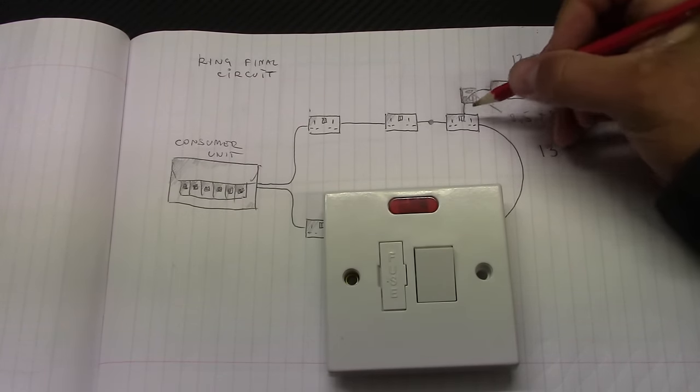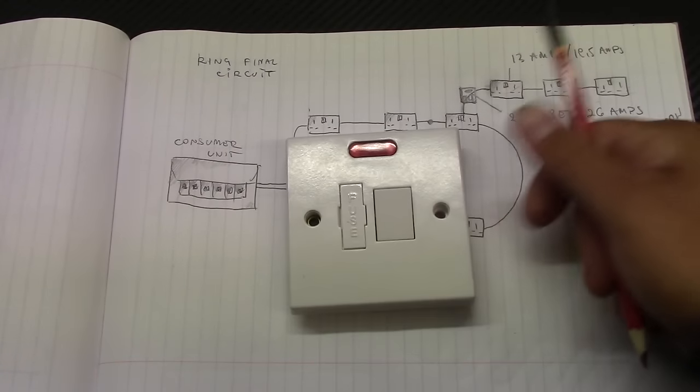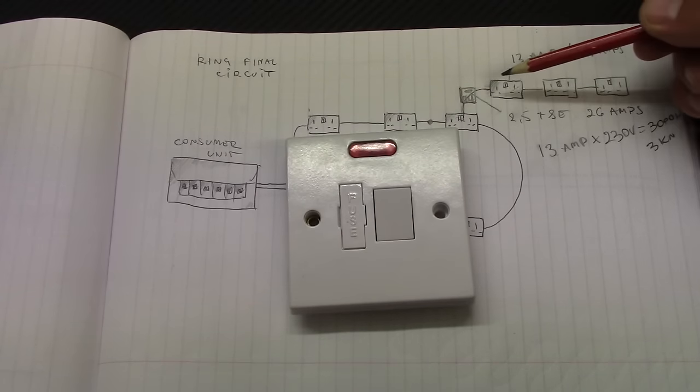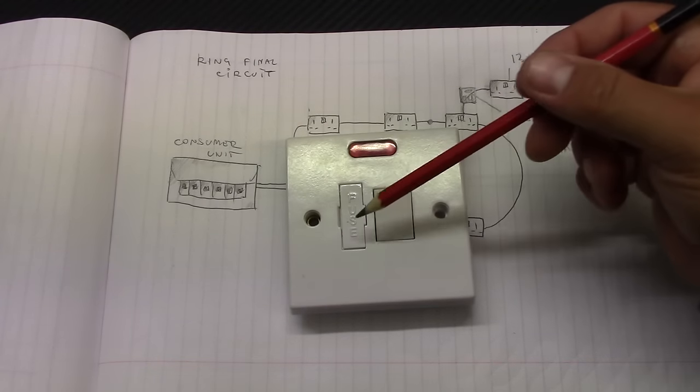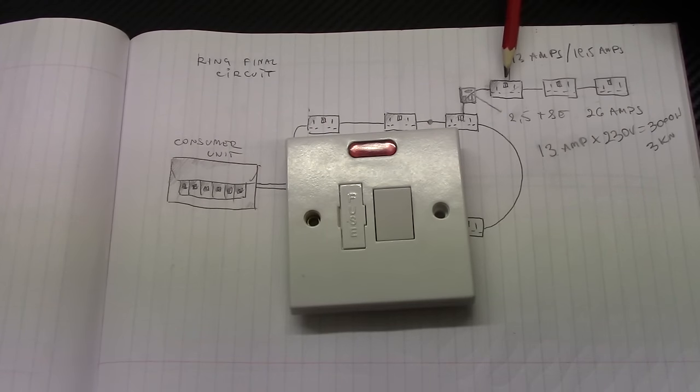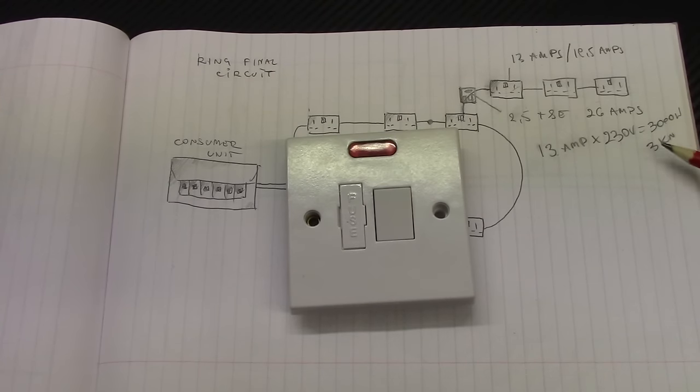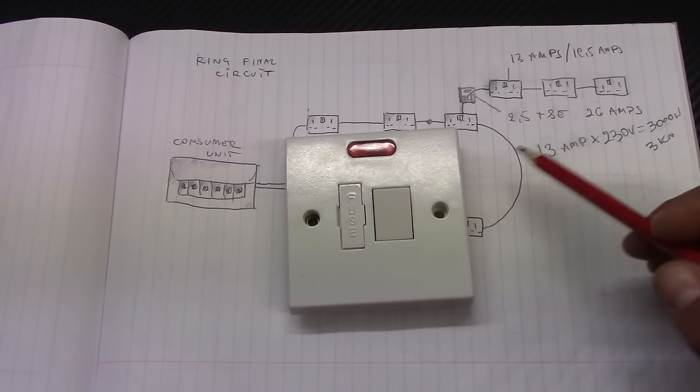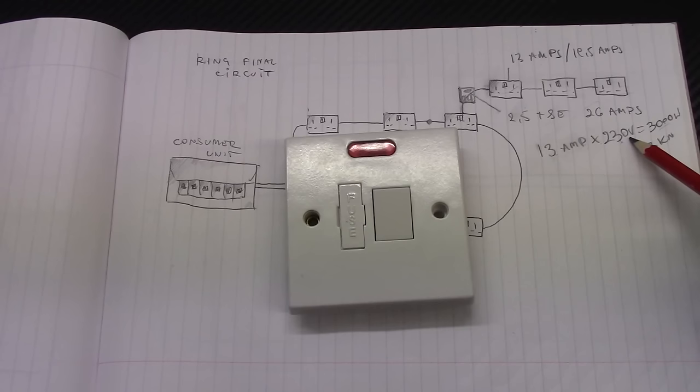This small device protects this cable. And the current drawn by all of the items plugged in these three sockets is limited to 13 amp fuse. So all the items, the power of the items is also limited to 3 kilowatts. So if you plug something which is more than 3 kilowatts obviously this fuse will be blown. 13 amp fuse by 230 volts gives us about 3000 watts.